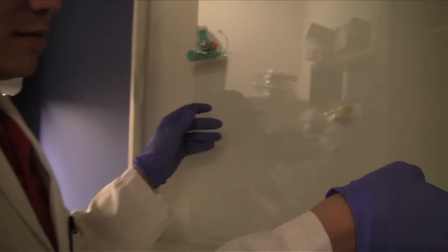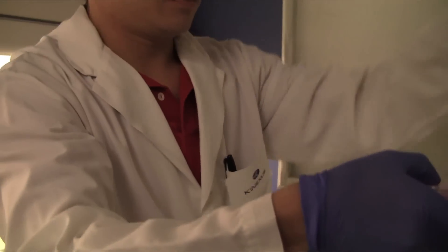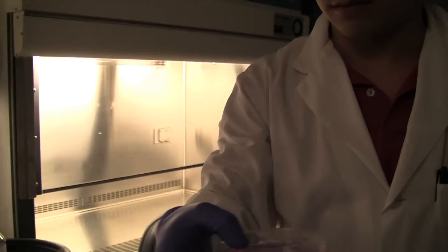Open the door of the CO2 incubator and remove two 100 mm dishes of cultured cells which contain a layer of culture medium. The dishes should be labeled as control and treated.